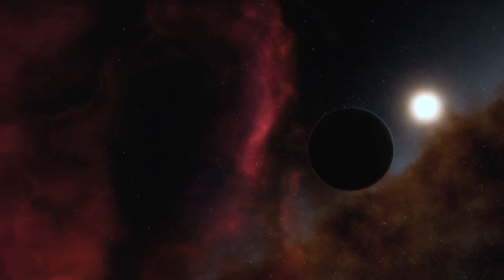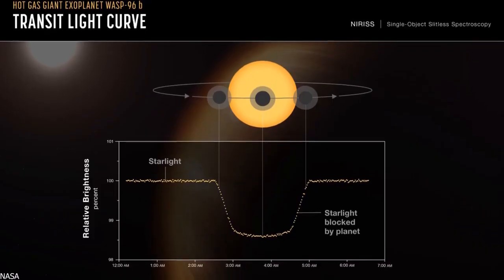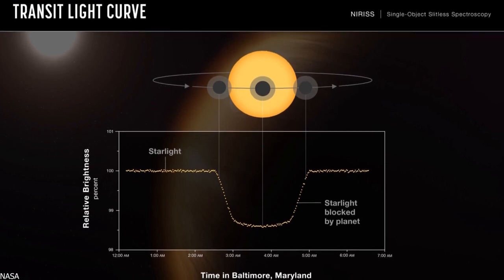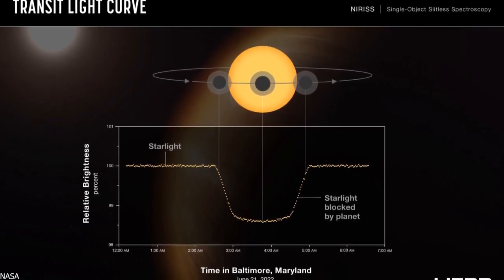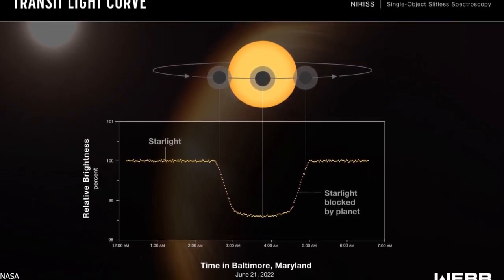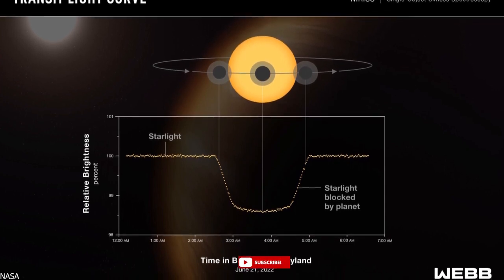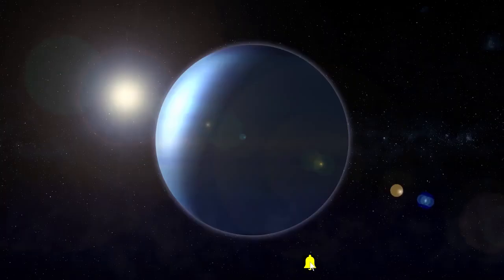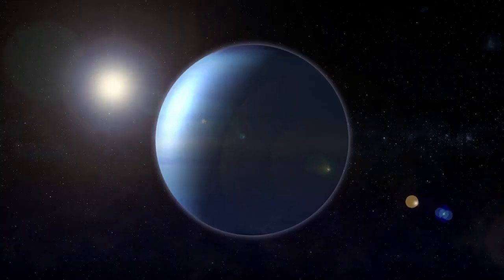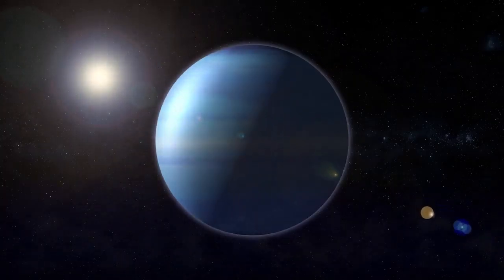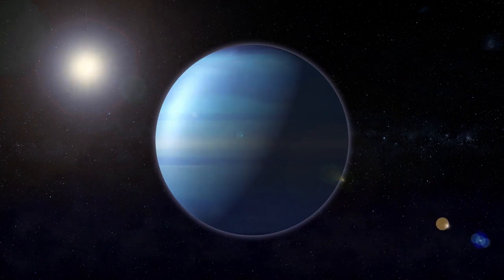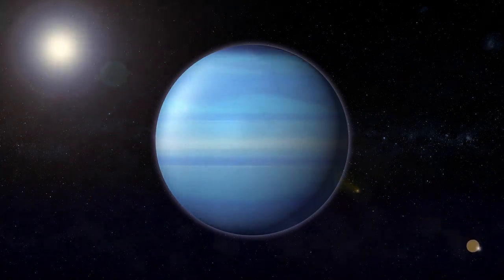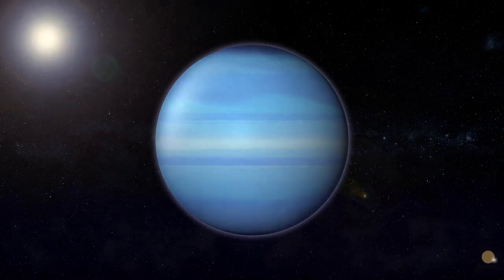The result is a light curve that shows the overall dimming of starlight during the transit and a transmission spectrum that shows the brightness change of individual wavelengths of infrared light between 0.6 and 2.8 microns. While the light curve confirms the planet's existence, size, and orbit, the transmission spectrum also reveals previously hidden details of the atmosphere: the unambiguous signature of water, indications of haze, and evidence of clouds that were once thought not to exist based on prior observations.